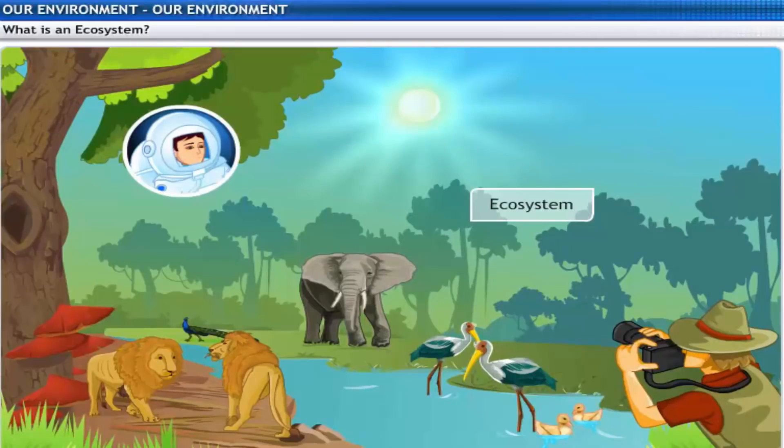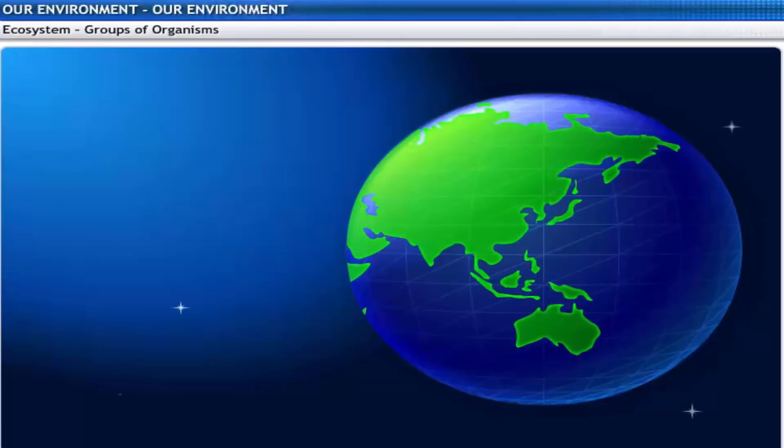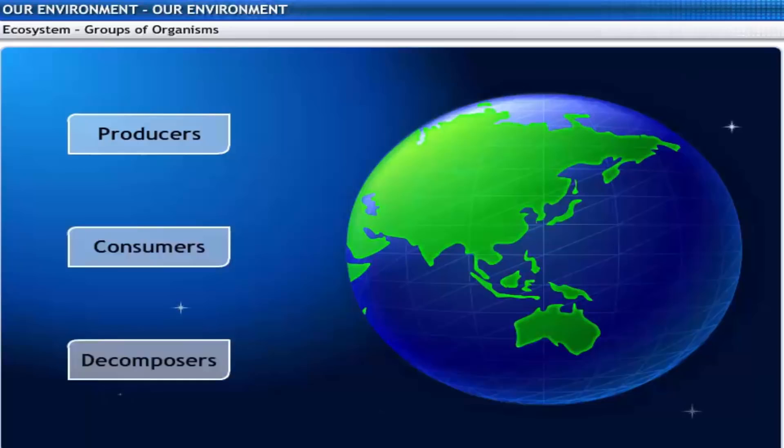It looks wonderful from here, but are there any specific roles that each of these animals play in the ecosystem, or do they all contribute equally to the ecosystem? Organisms in the ecosystem are grouped as producers, consumers, and decomposers based on the manner in which they sustain themselves in the environment.